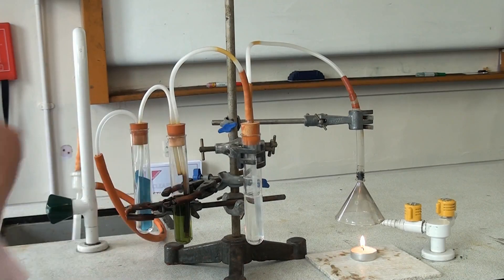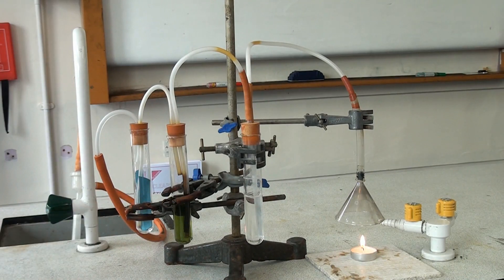Then in the next tube we've got some universal indicator which is starting out green and in the last tube we've got some cobalt chloride paper which is starting out blue.